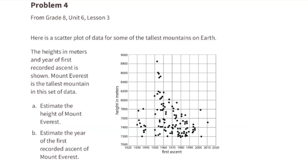Problem number four from 8th grade unit 6 lesson 3. Here is a scatter plot of data for some of the tallest mountains on Earth. The heights in meters and year of first recorded ascent is shown. Mount Everest is the tallest mountain in this set of data.